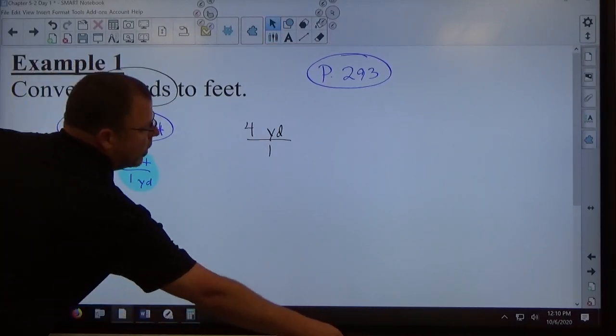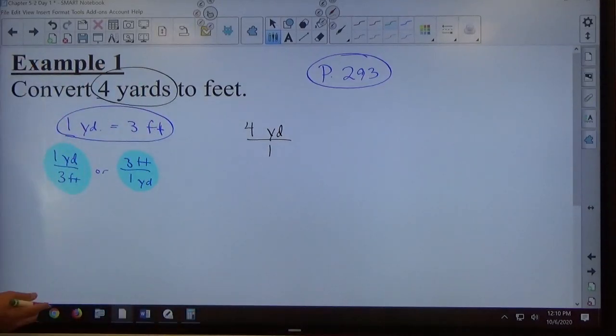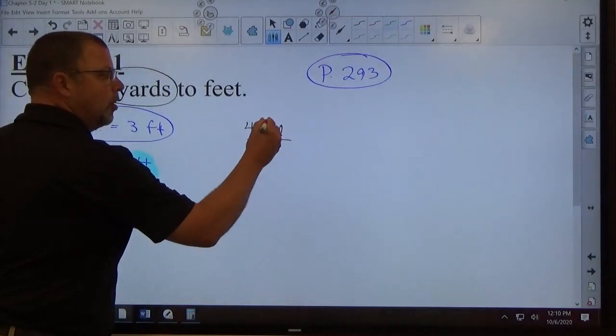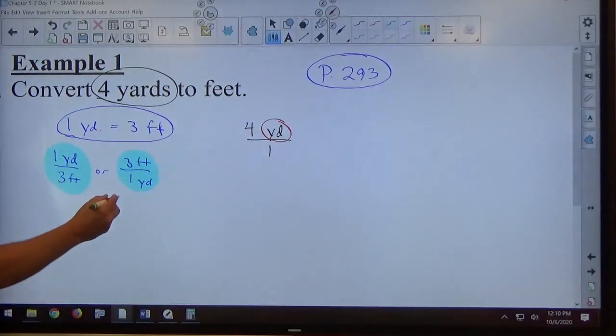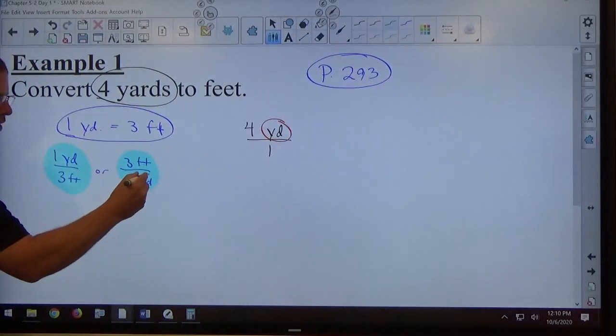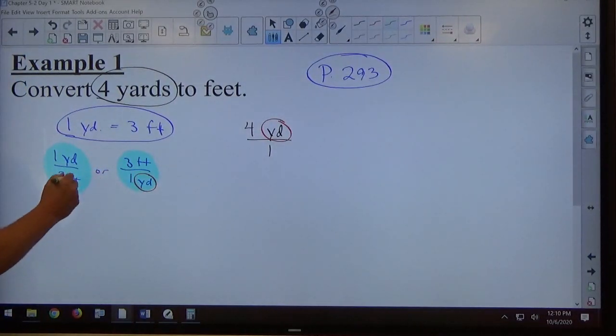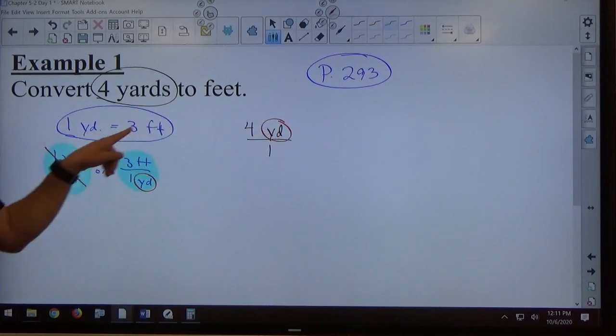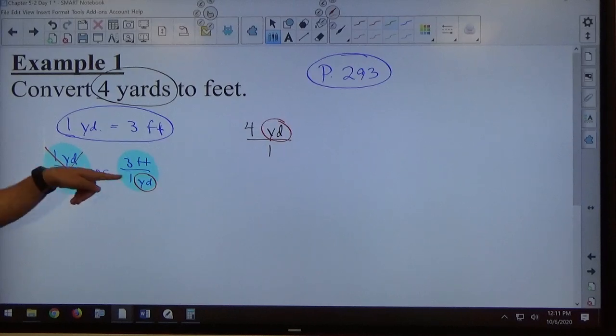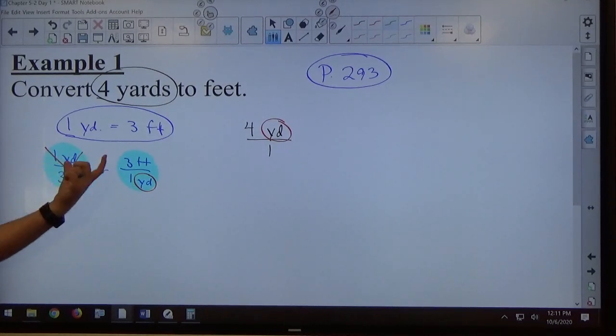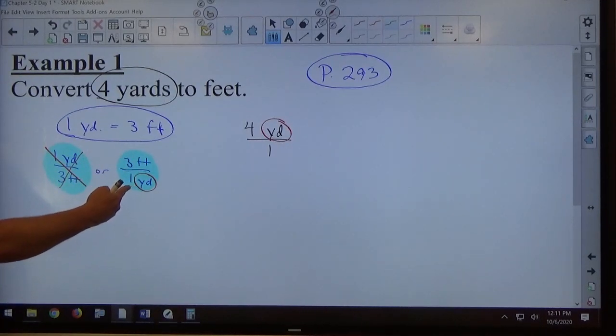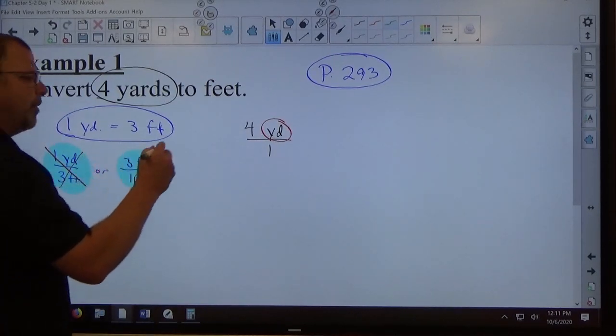Then you use one of these two in order to convert. The way you decide which one to use is based on the position of the unit of yard. Currently, yard lives in the numerator. We need one of these two that has yards in the denominator. This one's not helpful in this specific problem. If this said feet, feet on the bottom would be helpful. So again, you have two facts. One fact leads to two unit multipliers. Only one of those is helpful. You want the unit in the correct spot to cancel. So I'm going to take three feet over one yard.